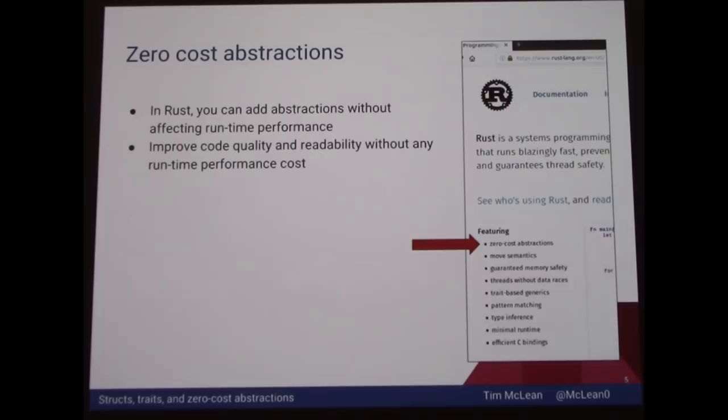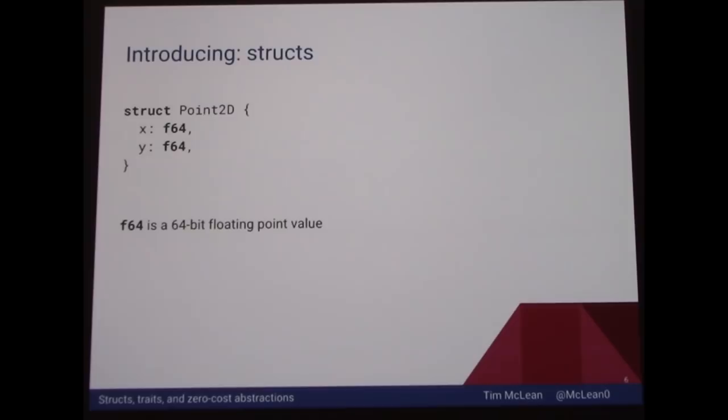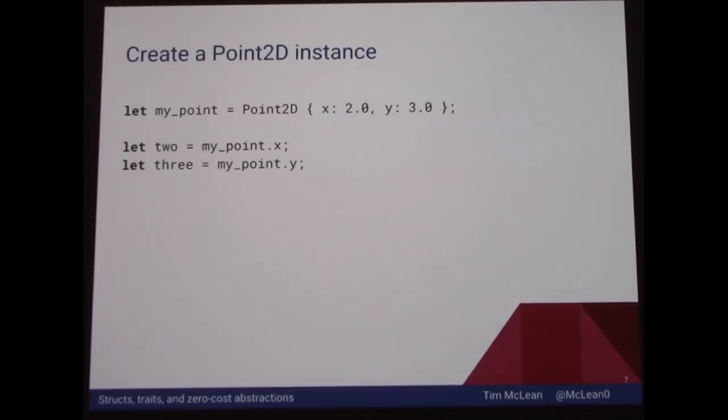First, we're going to talk about structs. We have a struct called Point2D, and it's going to have two fields: x and y. f64 is Rust's 64-bit floating point value. Looking at some syntax: if you want to create an instance, we have the Point2D syntax where we specify a value for x and a value for y, and then we access the fields with .x and .y.